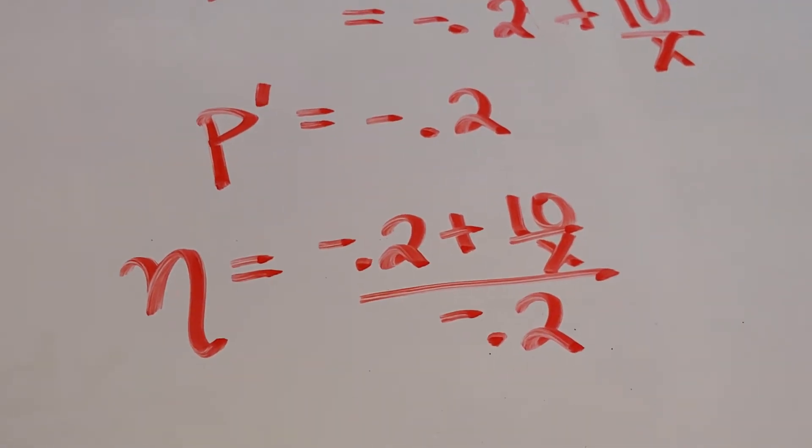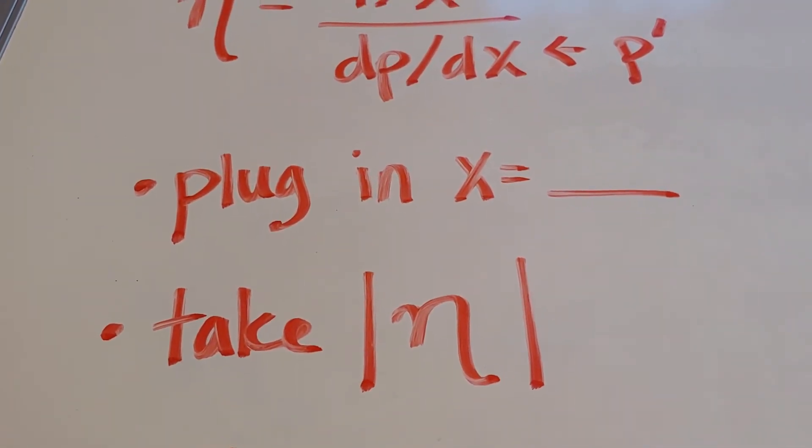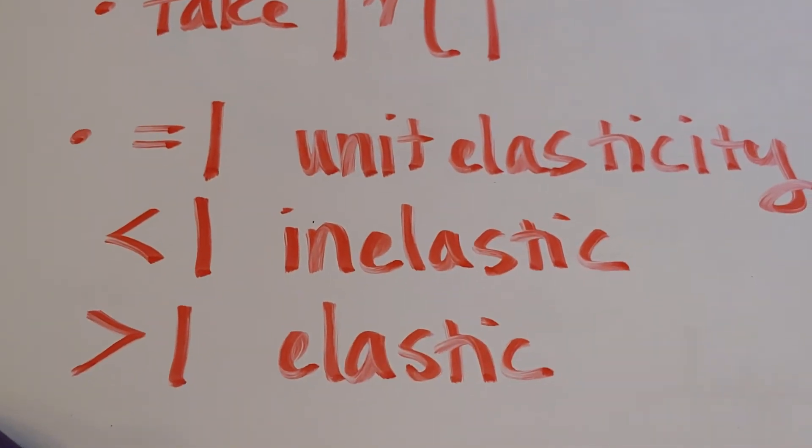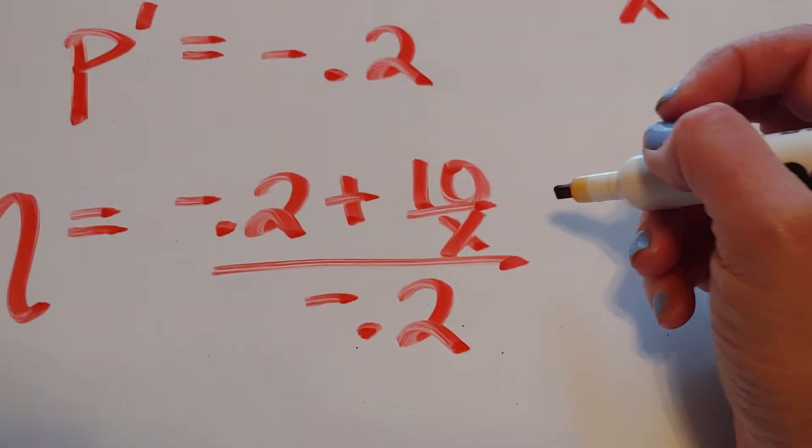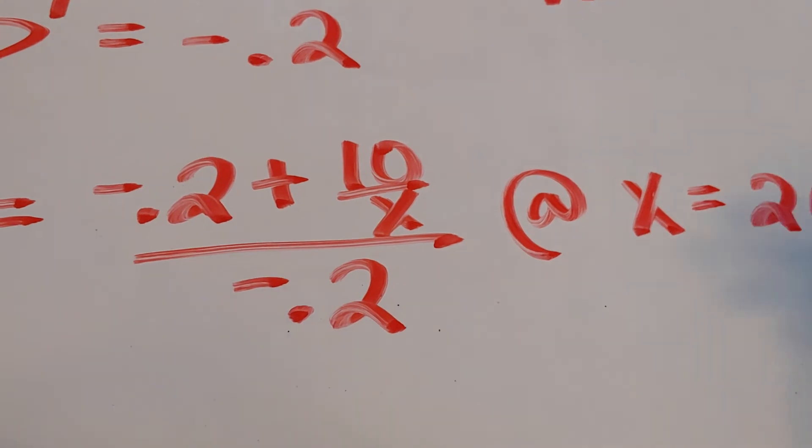Now I'm supposed to plug in the x value, take the absolute value, and then make a judgment. So my x value that I was given was x is 20.